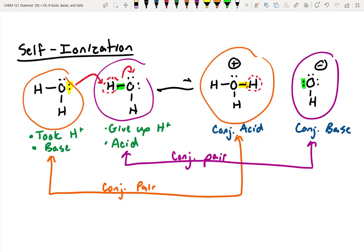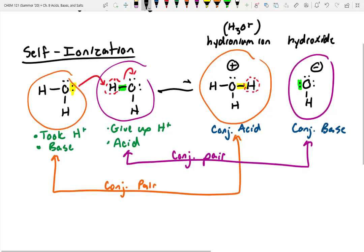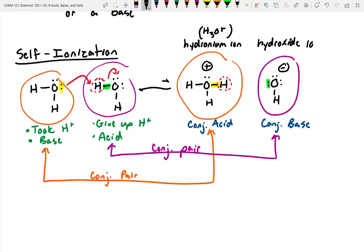In fact, let's even name those right here. So this is hydronium ion. That's just H3O plus. And then over here, we've got the hydroxide ion, which is just OH minus.